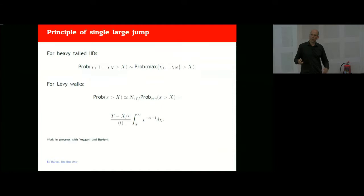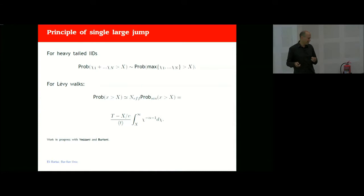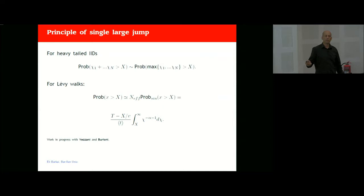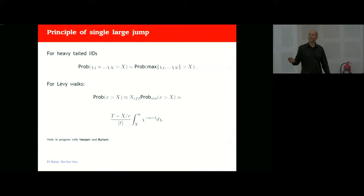There is a principle — work with Alessandro Vezzani and Raffaella Burioni not yet published — that in these systems, one event in the sequence controls the rare fluctuations. This can be seen from sums of independent identically distributed random variables: the probability that the sum exceeds capital X is proportional to the probability that the maximum exceeds X. So there is one big jump in the process that controls the rare events.